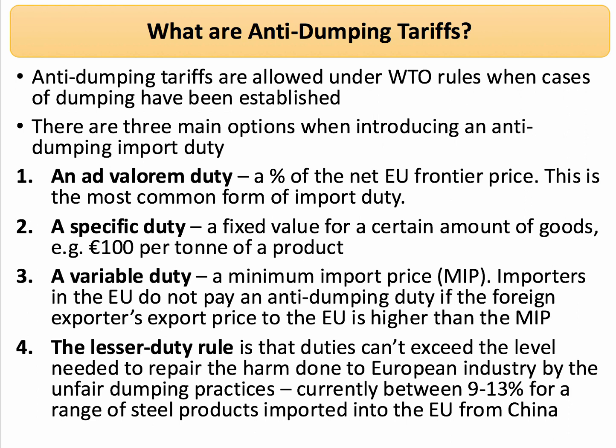If you can prove dumping, under WTO rules you are allowed to introduce an anti-dumping tariff. There are three main options: a percentage tariff — a so-called ad valorem duty, which is the most common; a specific duty, such as 100 euros per tonne; or a variable import duty linked to the situation. There is also the lesser duty rule, meaning an import duty cannot exceed the level needed to repair the harm done to the industry. In the EU context, the anti-dumping duty on Chinese steel is typically around 9 to 12 percent.